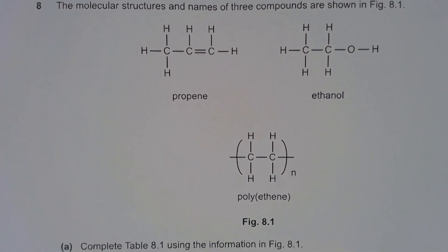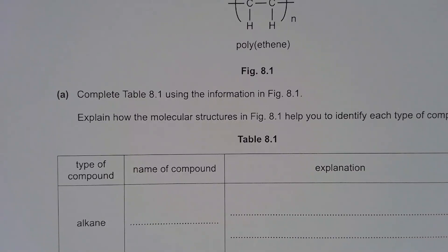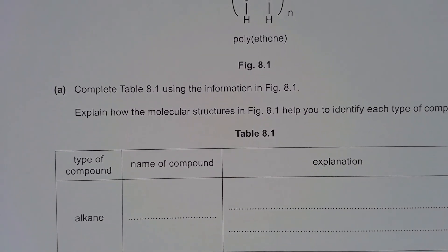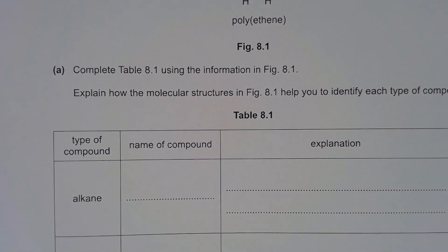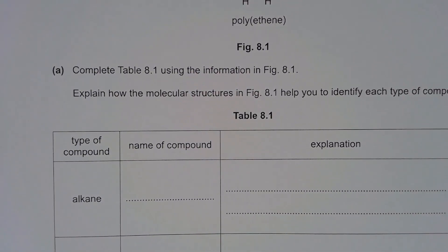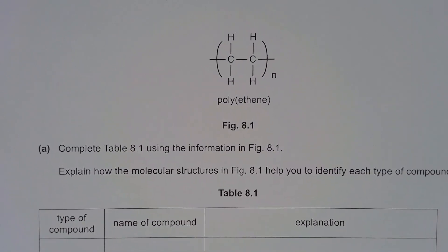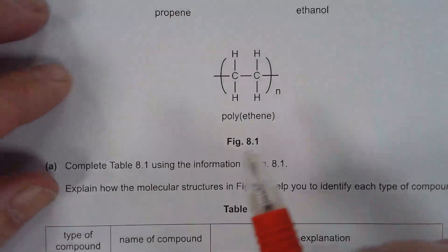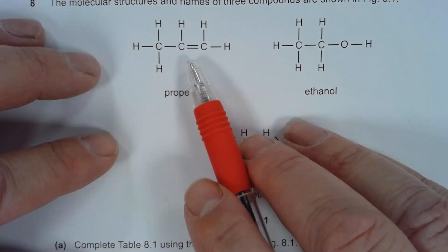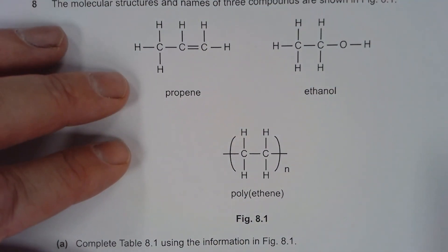And the first question is to complete table 8.1 using the information in figure 8.1 to explain how the molecular structures help you identify each compound. So we can start off with some ideas here. First of all, the alkene is the obvious one because the alkene is a hydrocarbon with double bonds. So that would be propene.